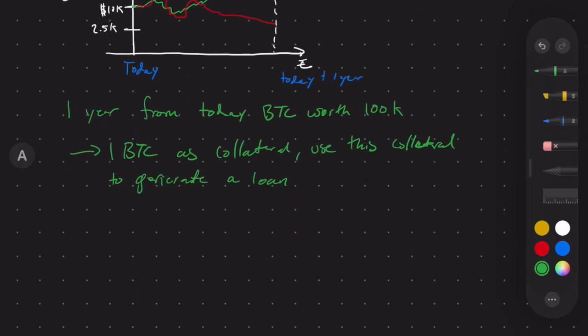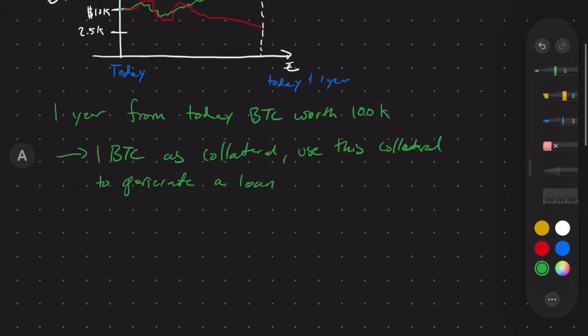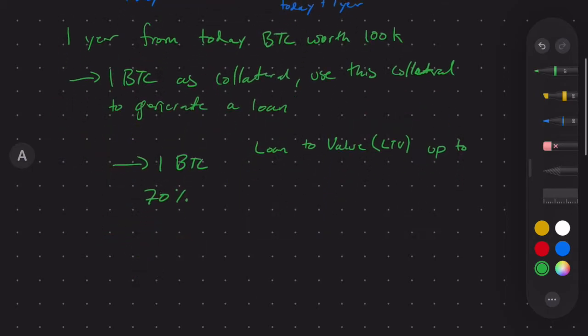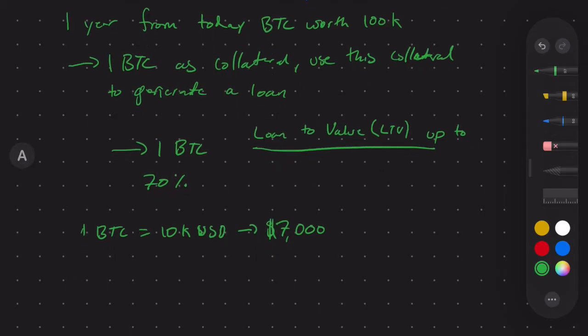This means that I can put my one Bitcoin as collateral and then use this collateral to generate a loan. So how does this work? I submit my one Bitcoin and from here I can take out a loan with a loan to value ratio, LTV, of up to 70%. So this means if one Bitcoin equals $10,000, I can take out a loan of up to $7,000 to match this loan to value ratio.